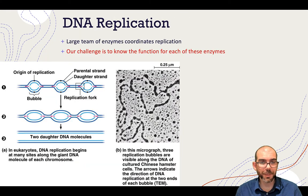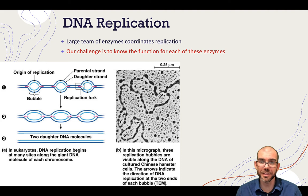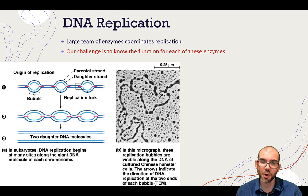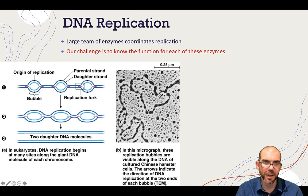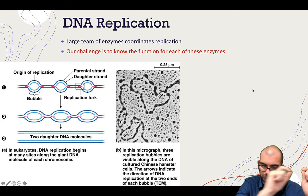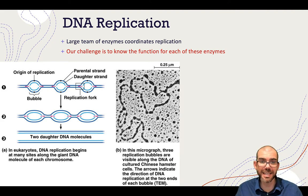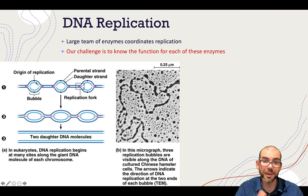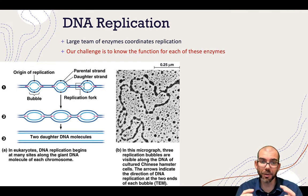Before we jump into everything involved with DNA replication, it is a large team of enzymes that are going to have to coordinate to pull this off. Our challenge is to know what these enzymes are and the function of each when replicating DNA. Here's what DNA replication looks like under the microscope. Notice that DNA is not replicated from one end and built all the way down. Instead, DNA replicates from multiple points called origins of replication, building in each direction. When this happens, it forms a bubble and creates little forks that we call replication forks.